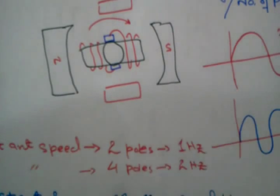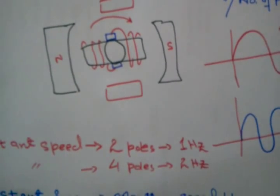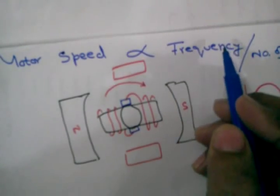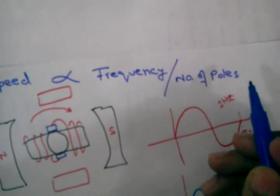So from this assumption, it is easily seen that motor speed is directly proportional to frequency and inversely proportional to the number of poles.